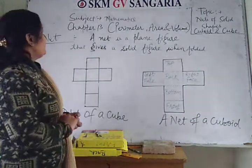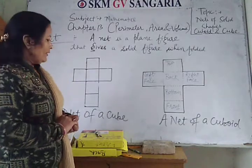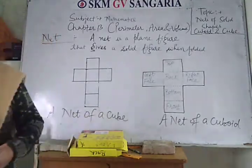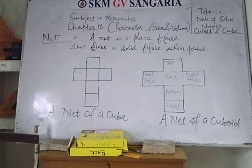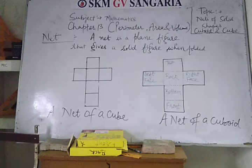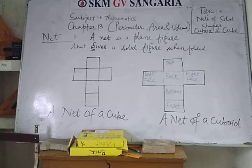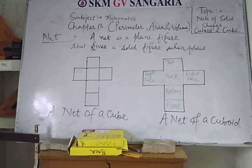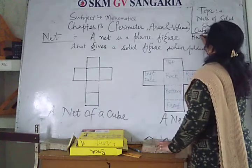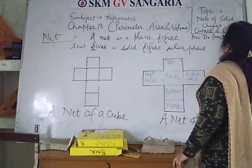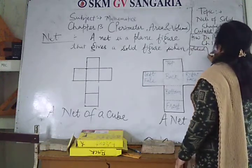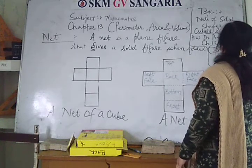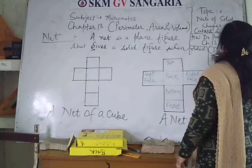A net is a plain figure that gives a solid figure when folding. Your work is you will do Practice Zone 8 of your book — Discovering Math, Chapter 13. Do practice on Practice Zone 8, Chapter 13 of Discovering Math.